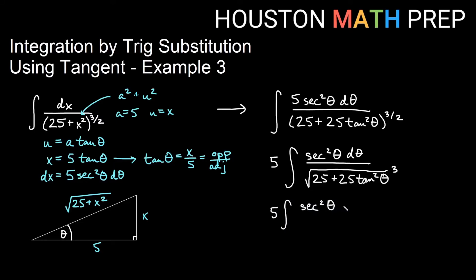We'll have secant squared theta d theta. And then we'll have the square root of 25 times the Pythagorean identity we were creating on purpose, which is 1 plus tangent squared theta. All of that cubed.